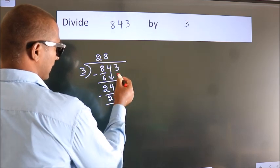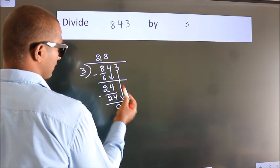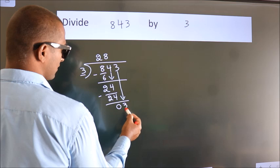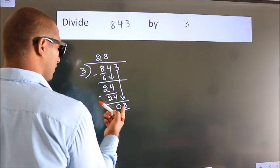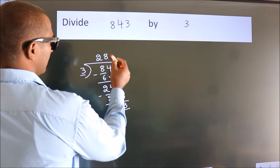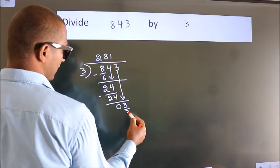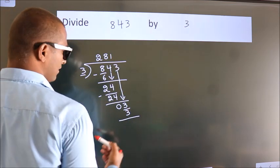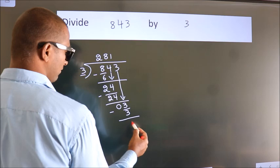After this, bring down the beside number. So 3 down. So 3. When do we get 3? In the 3 table. 3 times 1 is 3. Now we subtract. We get 0.